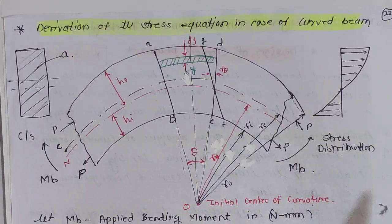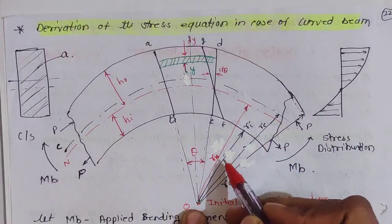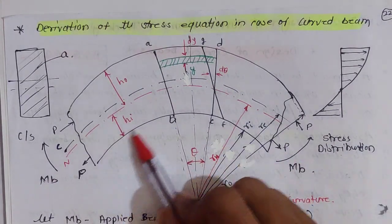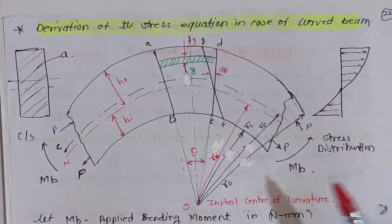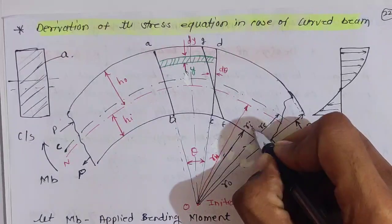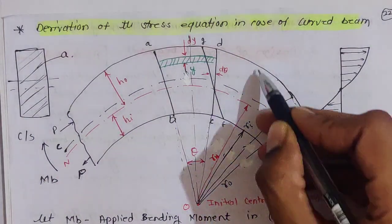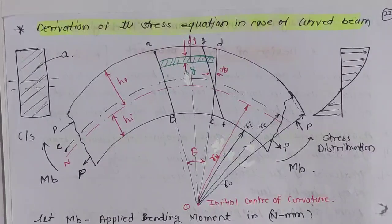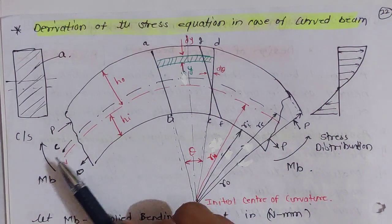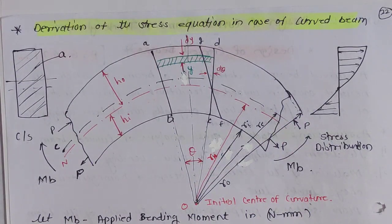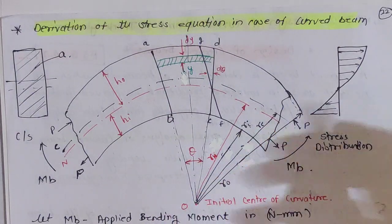The distance of the neutral axis from O, the initial center of curvature, is called the radius of curvature of the neutral axis, denoted as RN. For the lowermost or inner fiber, the radius is called RI — the inner radius of curvature of the beam. For the outermost fiber, it is RO — the outer radius of curvature. For the centroidal axis, it is RC, which you can also just call R.